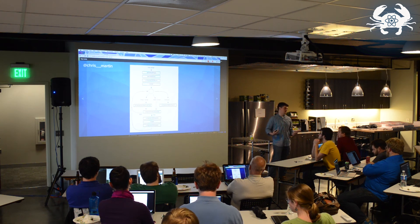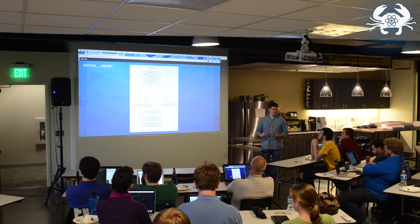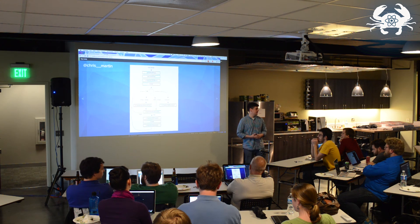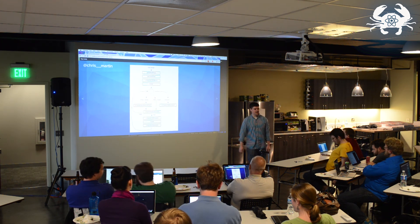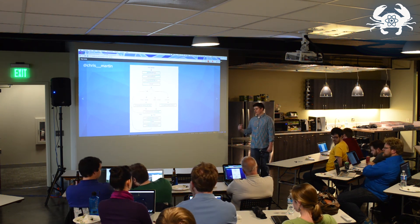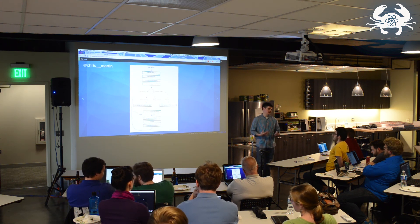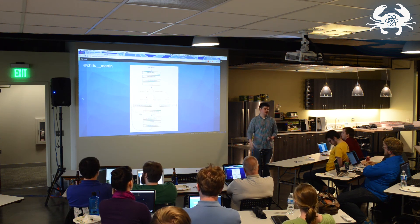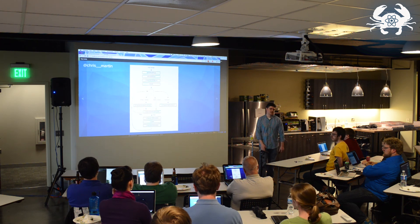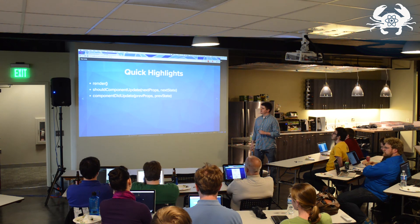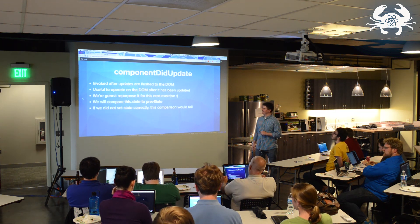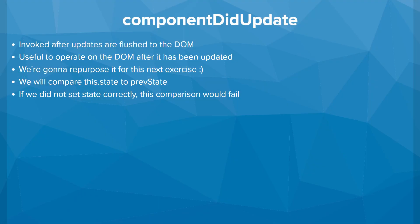The other lifecycle method I wanted to call out that we'll use in our last exercise is componentDidUpdate. componentDidUpdate gets invoked after React re-renders your component. There you can do some checks and operate on the DOM — like, if this part of the state updated, I need to recall a Semantic UI function to reinitialize my dropdown or something like that. If you're trying to check whether something updated and you mutated your state, you're going to think it didn't update and wonder why your dropdown isn't working or why something couldn't render. So try not to mutate state directly.